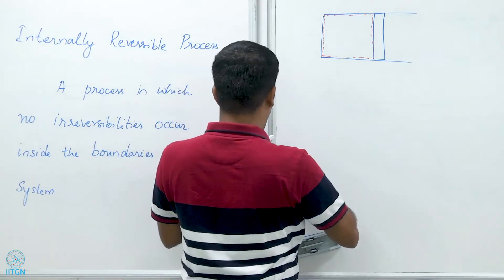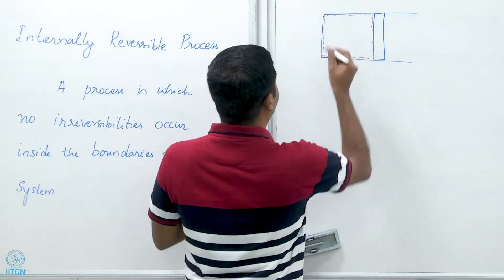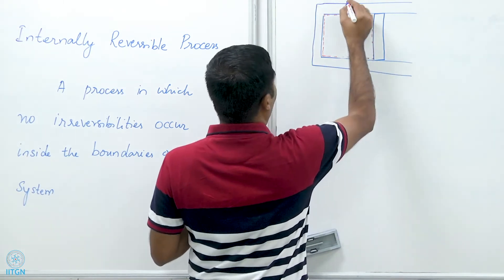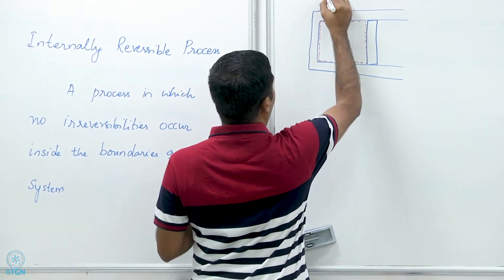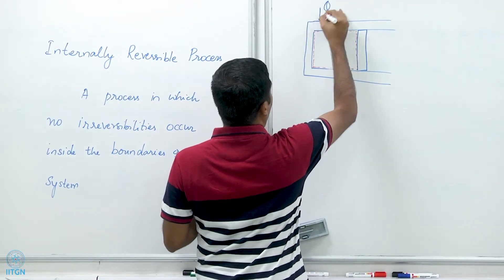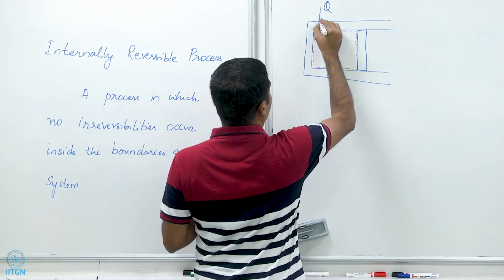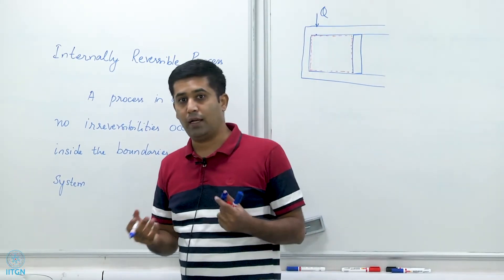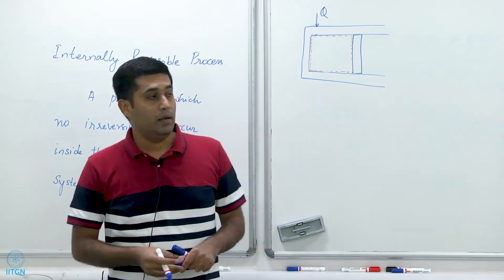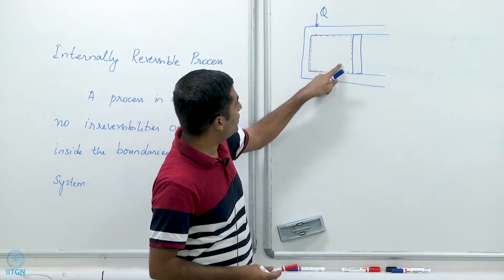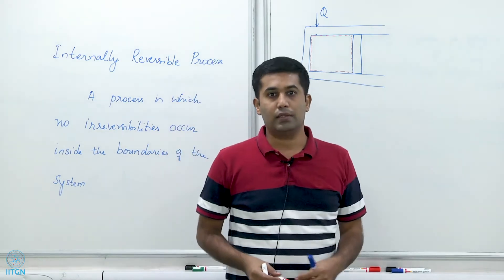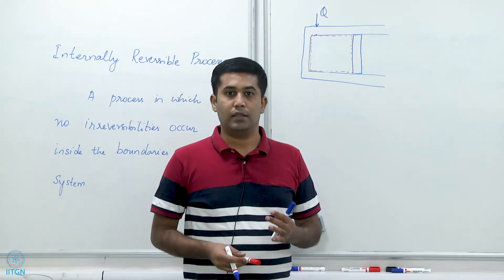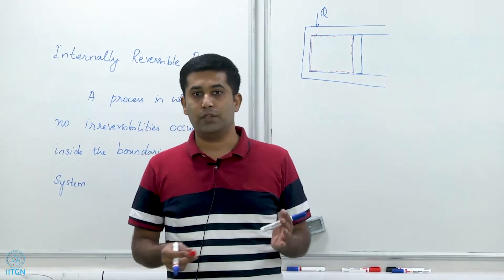Maybe this has a metal wall, and suppose I am heating the external metal wall. So there is a temperature difference between this point and this point, which means the metal wall has a finite temperature gradient. But as far as my system is concerned, at no point is the temperature different at any point in the system — which means there is temperature uniformity within the system at all points.